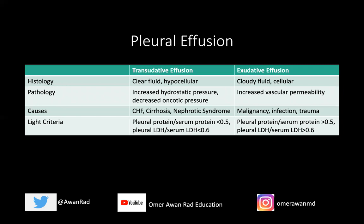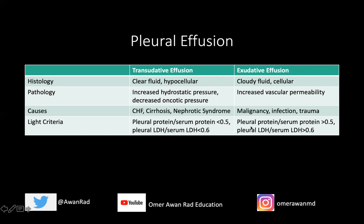For the USMLE, you want to differentiate a transudative versus an exudative effusion. A transudative effusion is hypocellular and clear — it's usually due to increased hydrostatic pressure or decreased oncotic pressure from fluid overload or edematous states like congestive heart failure, sodium retention, cirrhosis, and nephrotic syndrome. The key is Light's criteria: a pleural protein to serum protein ratio less than 0.5, or a pleural LDH to serum LDH ratio less than 0.6, indicates a transudate. An exudative effusion has a pleural protein to serum protein ratio greater than 0.5 and a pleural LDH to serum LDH ratio greater than 0.6, and this fluid is cloudy because it's cellular.